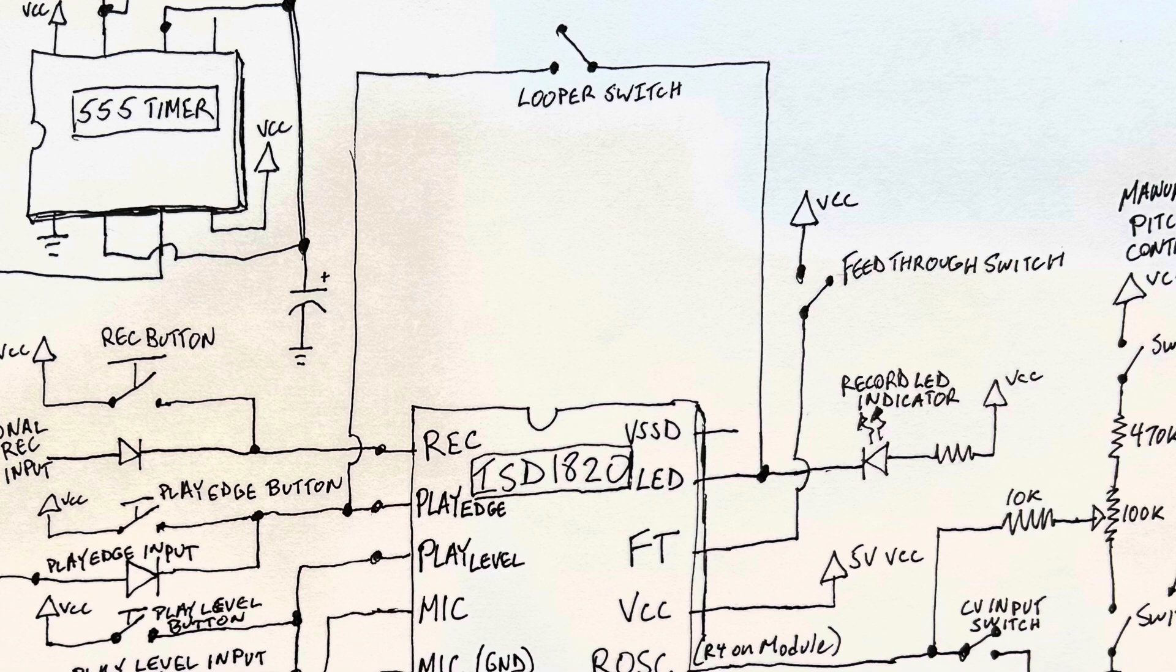The looper feature is basically coming from when you short the LED circuit, the LED pin, which is pin 15, to one of the play circuits. Basically at the end of message, the little LED light goes on, blinks for a short period of time and that activates the loop.